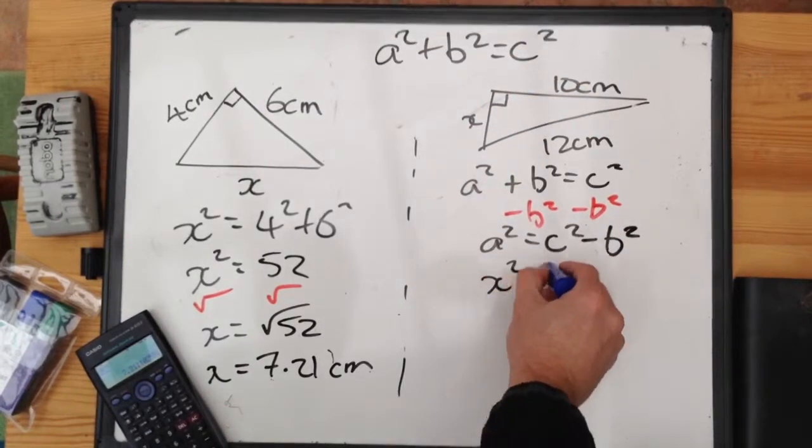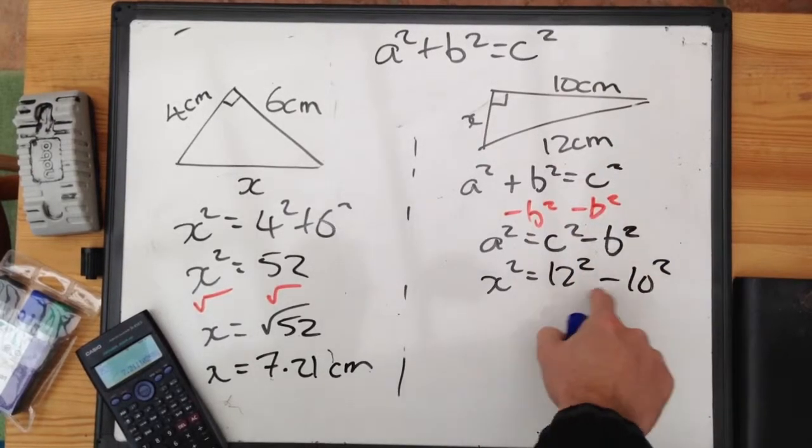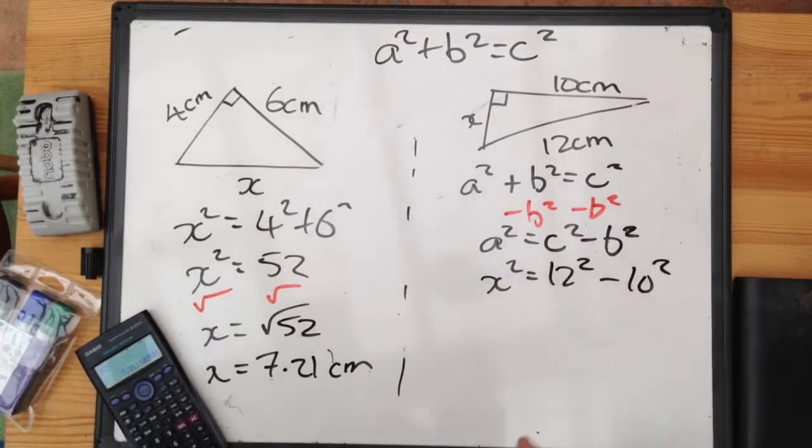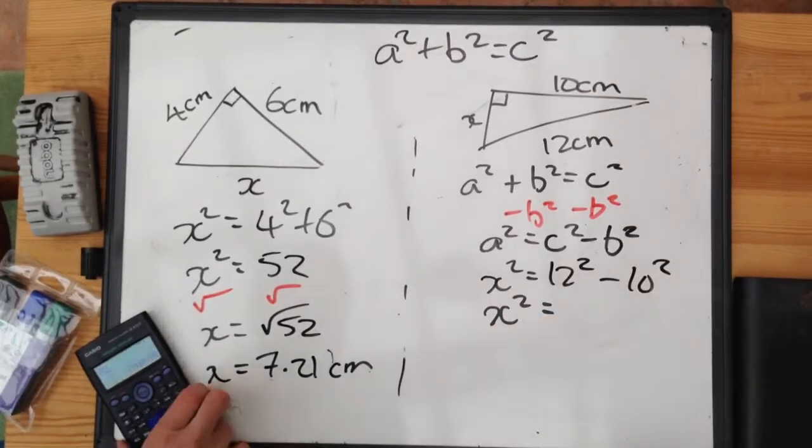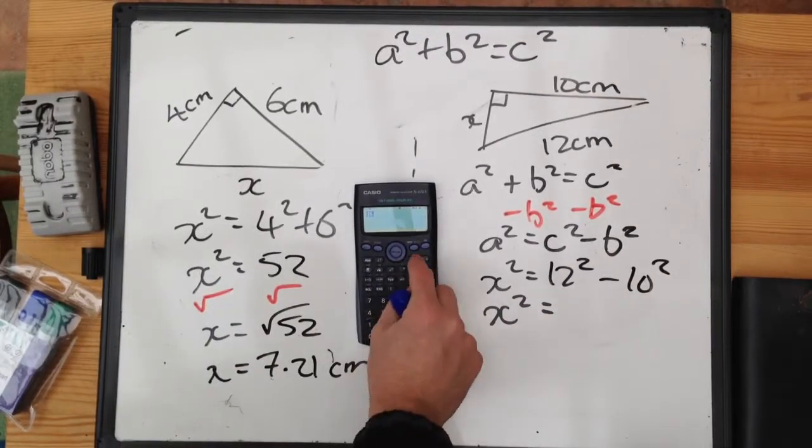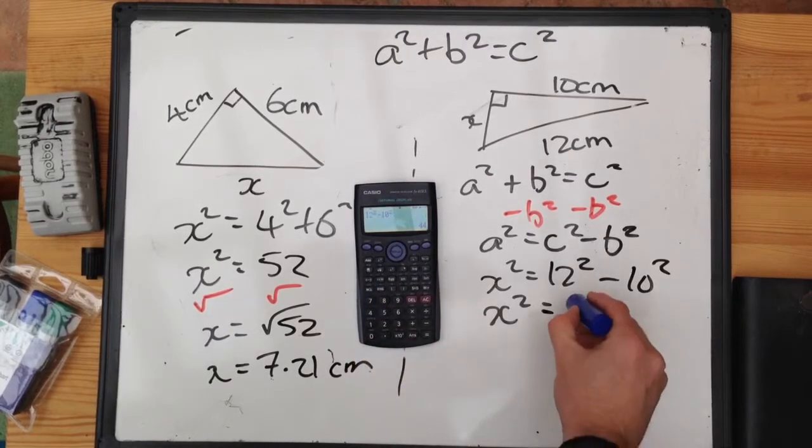we get that X squared is equal to C squared, 12 squared minus 10 squared. It's always the biggest square take away the smallest square, just to make sure you don't get a negative result there. Again, stick it in your calculator. You end up with 12 squared minus 10 squared equals 44.